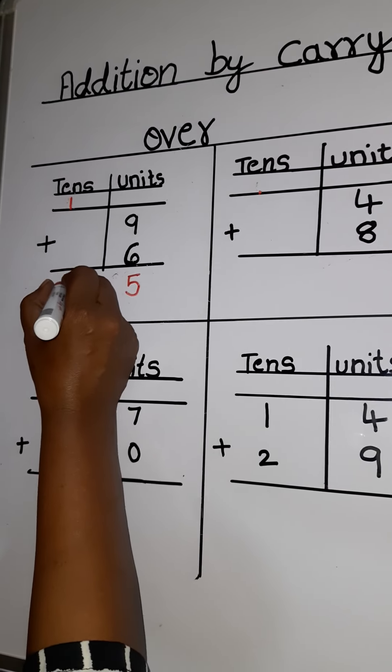So you rub this 1 and write it here. So how you have to add now 1. You have to read this number as 1. 1 plus 1 equals to 2. 2 plus 2 equals to 4. What is the answer? 43.